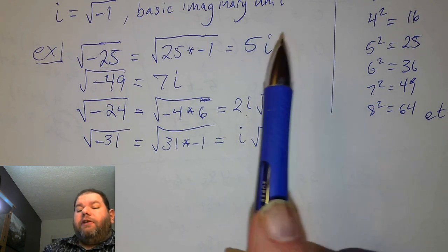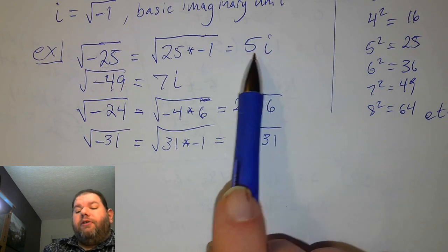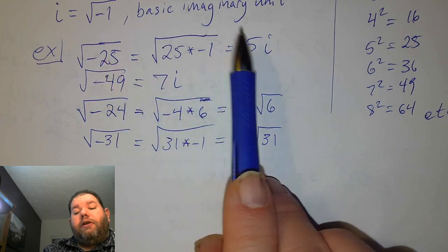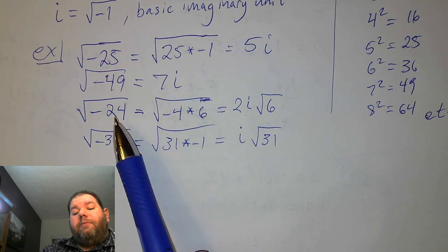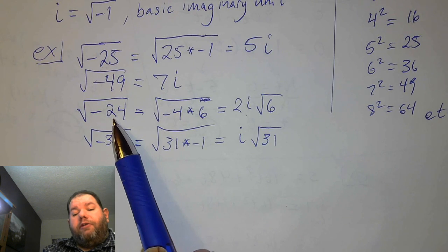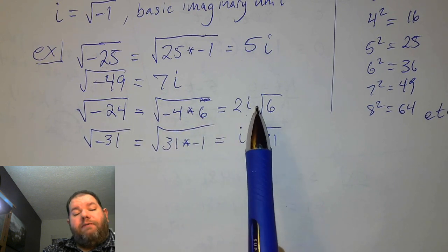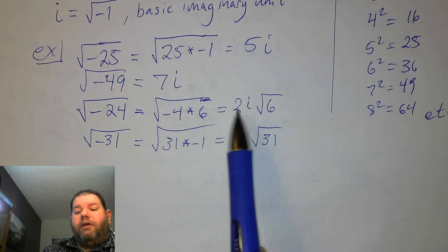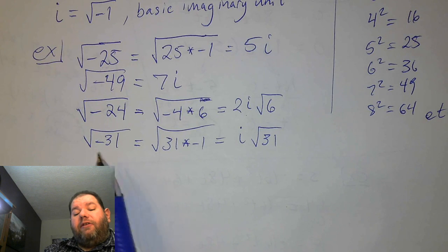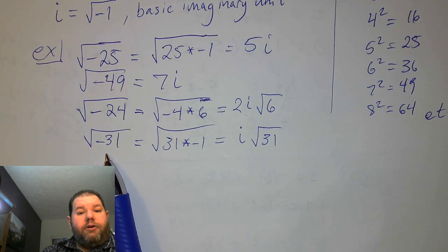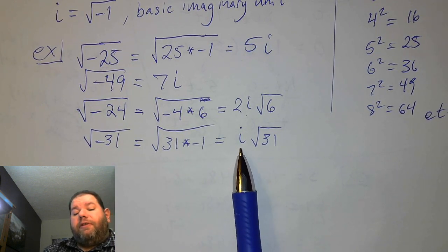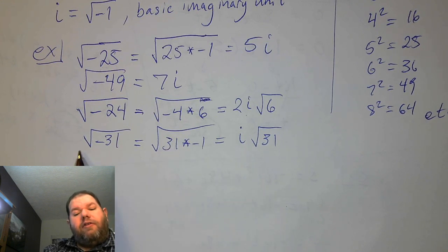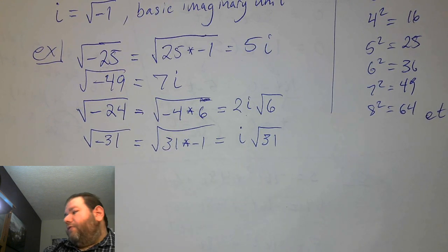For the square root of negative 31: 31 is actually a prime number and cannot be factored further than 1 times 31. So even though we can't split up the 31, we still take the negative sign and move it out so that we have an i on the outside and just leave the square root of 31 underneath.